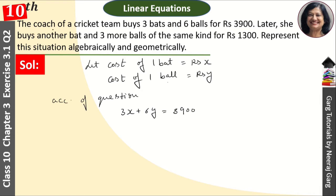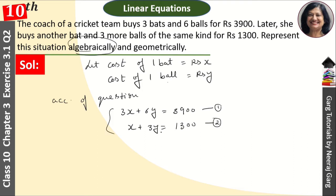Later she buys another bat and 3 more balls, giving us: x + 3y = 1300. These are our two equations. This is our algebraic representation of the situation, which is our first answer.